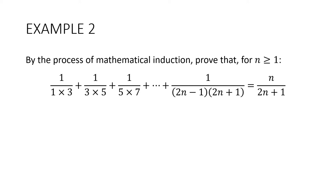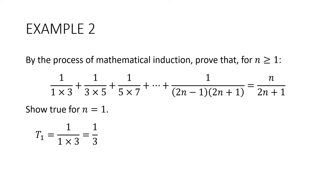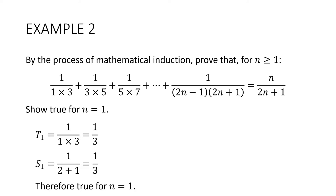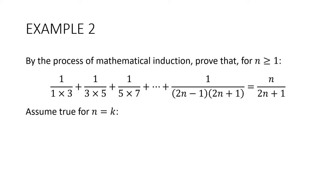Example 2. By the process of mathematical induction, prove that for n greater than or equal to 1, 1 over 1 times 3 plus 1 over 3 times 5 plus 1 over 5 times 7 plus dot dot dot plus 1 over 2n minus 1 times 2n plus 1 equals n over 2n plus 1. This series is neither arithmetic nor geometric — doesn't matter. Step 1: show true for n equals 1. The first term is 1 over 1 times 3, which is a third. The sum of the first term, substituting 1 in, gives 1 over 2 plus 1, which is also a third. Therefore it is true for n equals 1. Assume true for n equals k: the sum of k terms equals k over 2k plus 1.